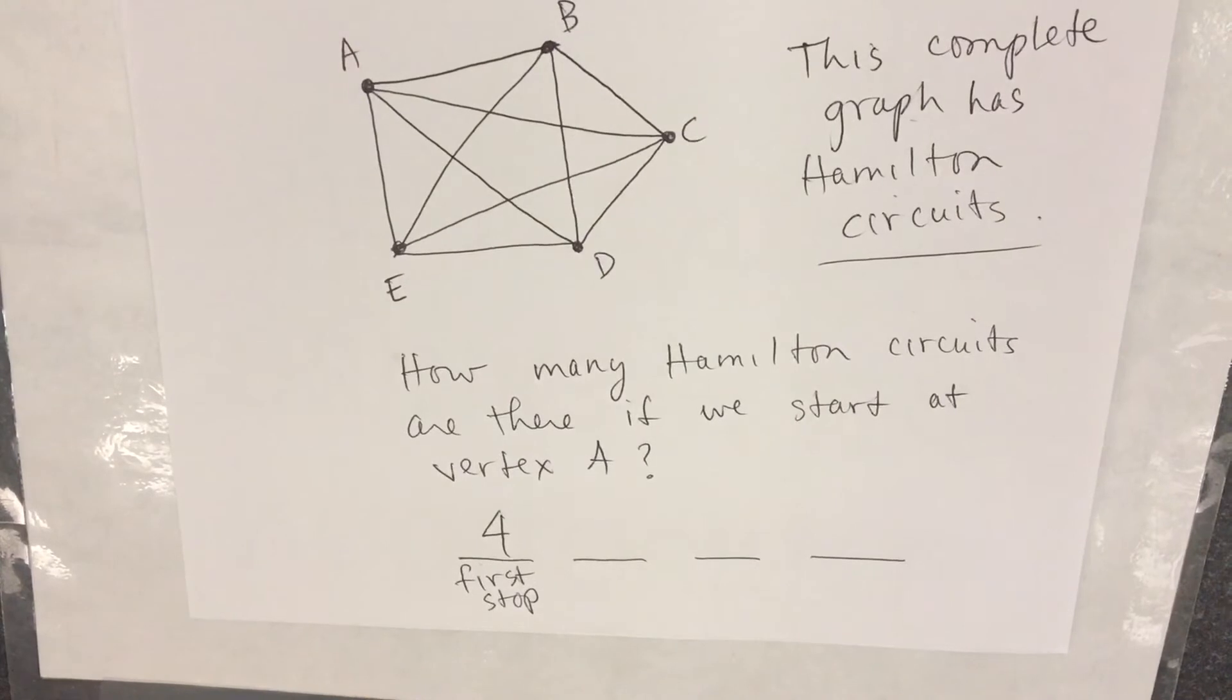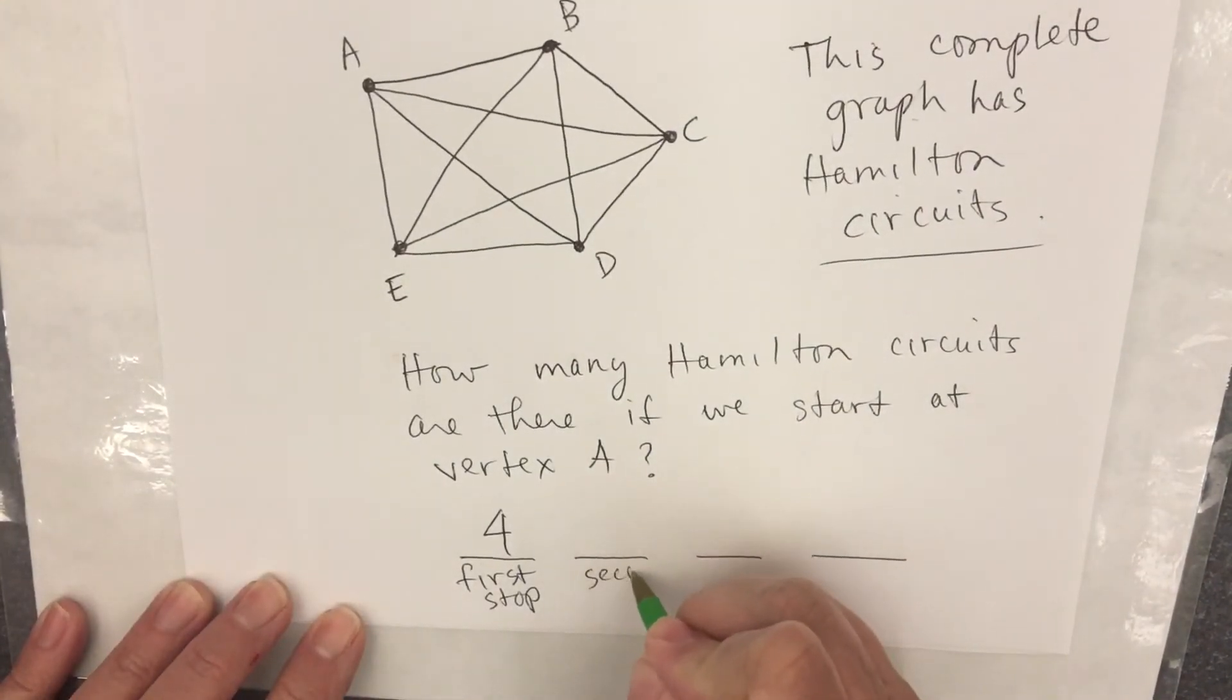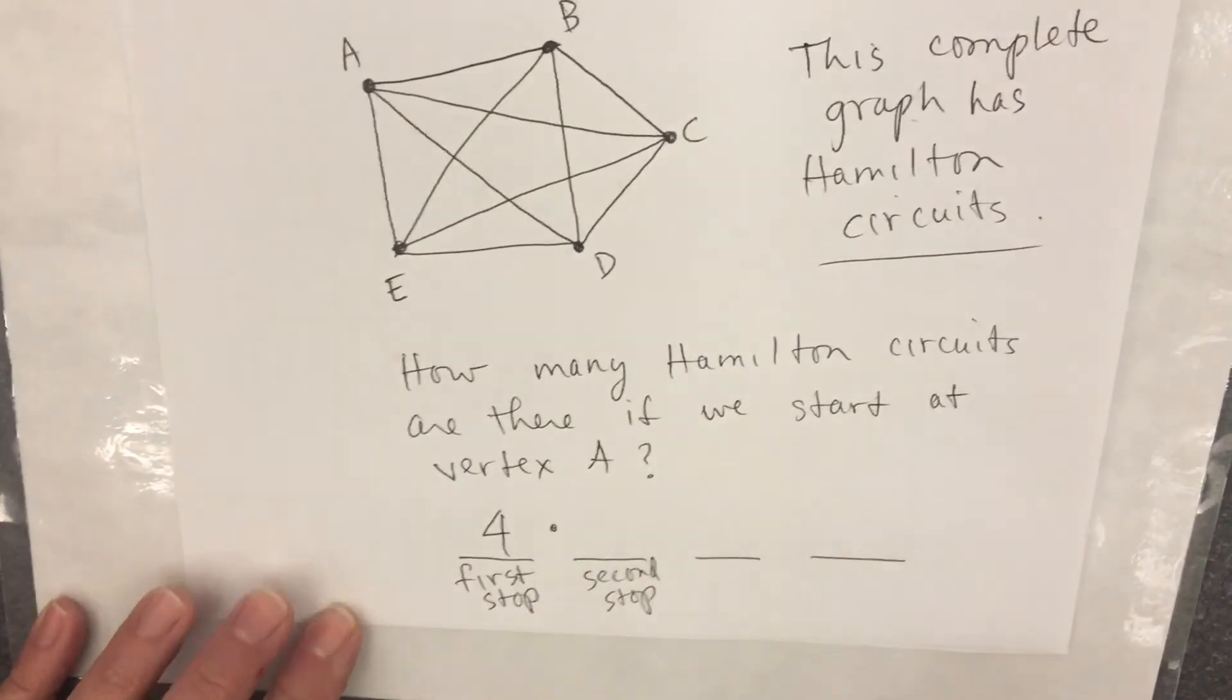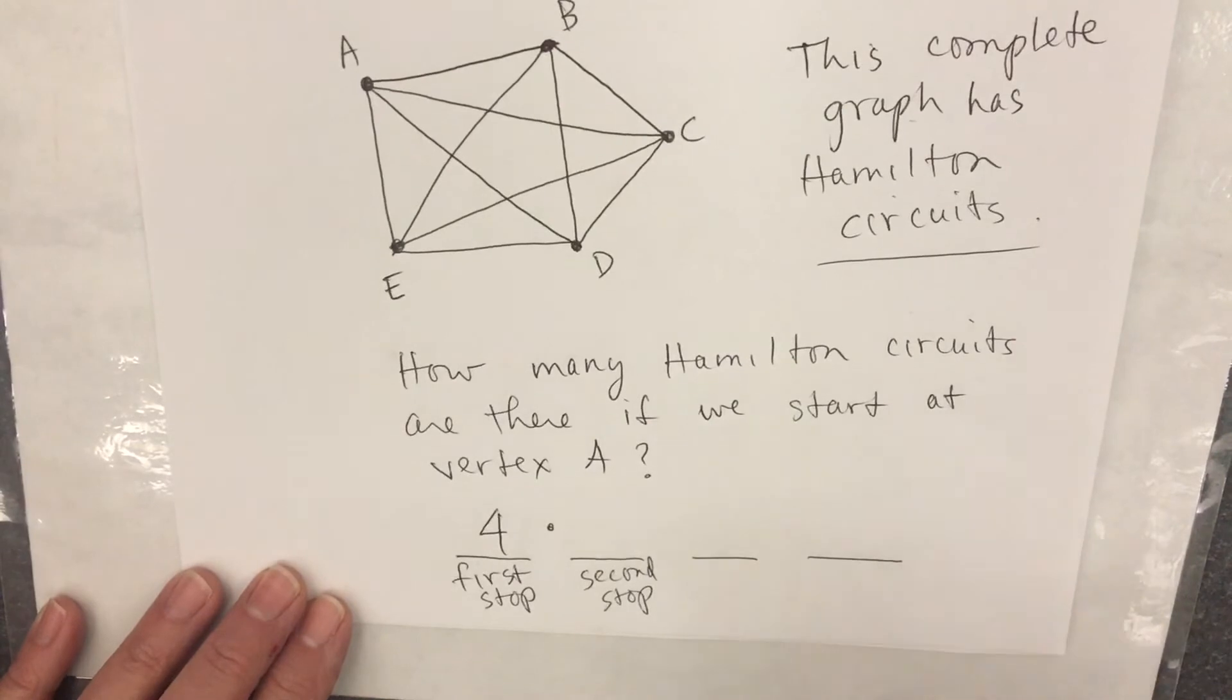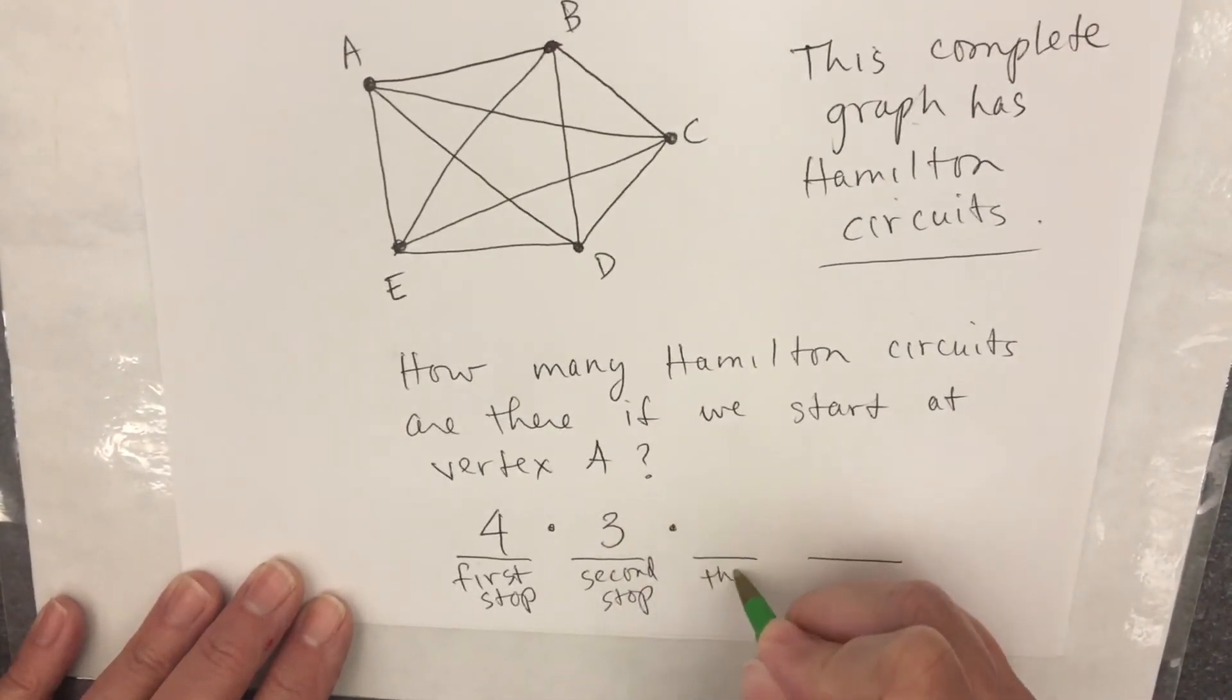I make my choice for where I'm going to go first. Then I'm going to go my next errand. This is my second stop. How many choices? Three because I've already made a choice.